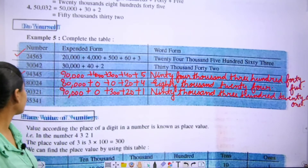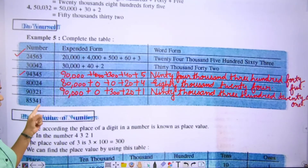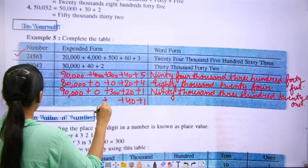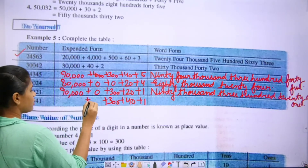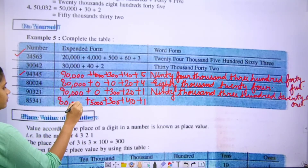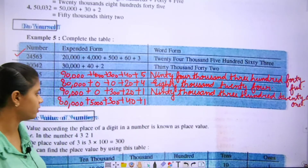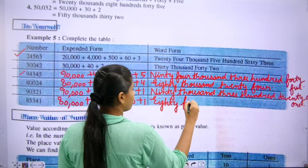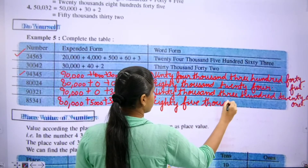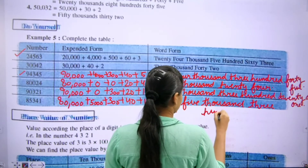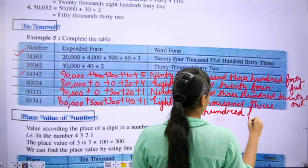Move to the next one. 85,341. The place values are: ones, tens, hundred, thousand, then ten thousand. We read it as 85,341 — eighty-five thousand, three hundred forty-one.